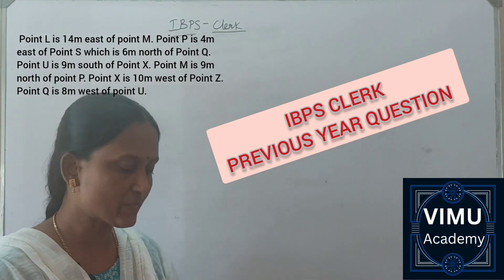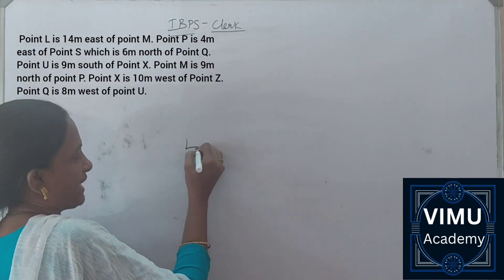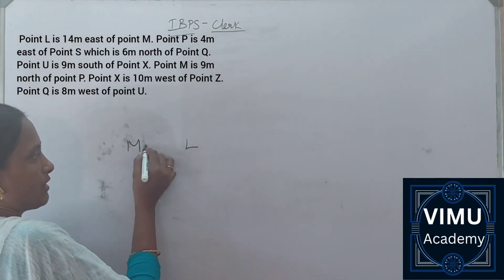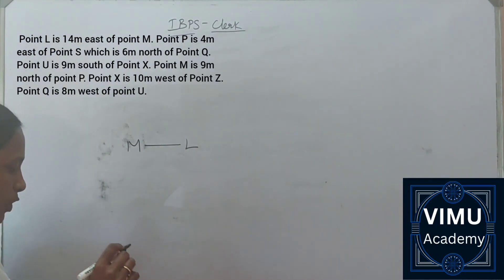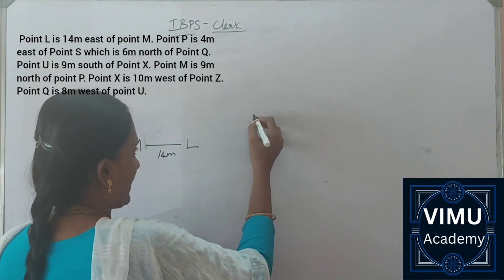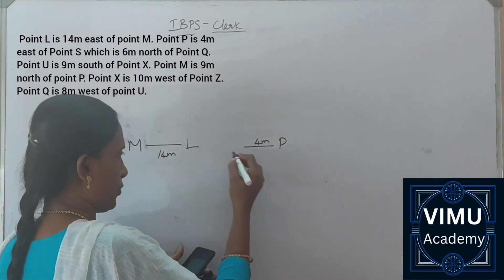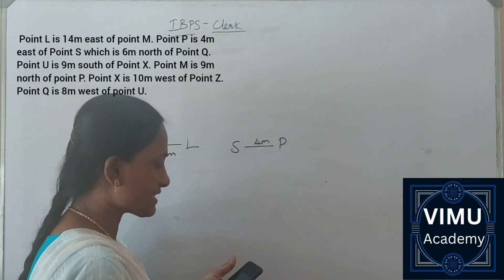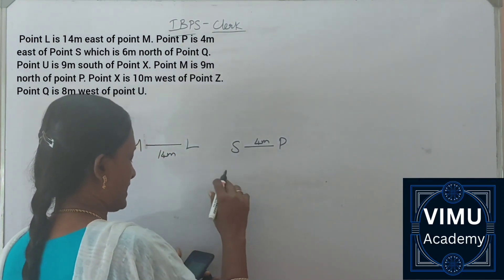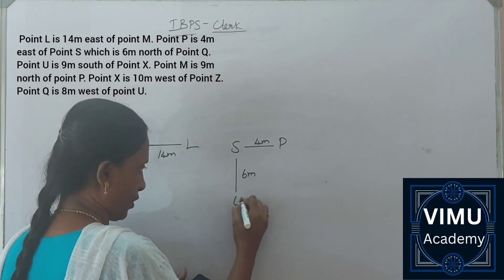The question is: Point L is 14 meters east of point M. Point P is 4 meters east of point S, which is 6 meters north of point Q.